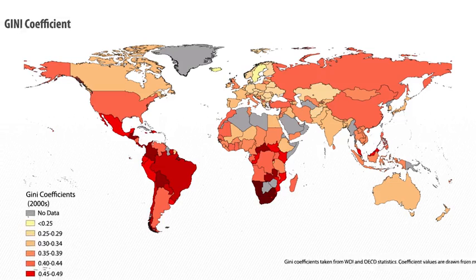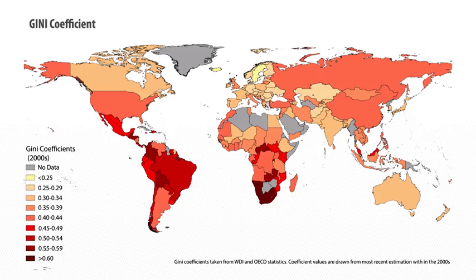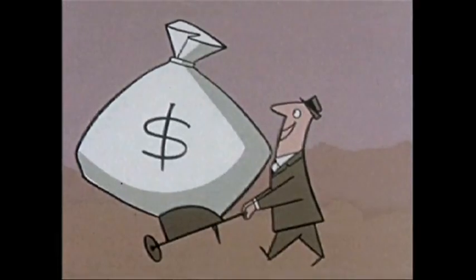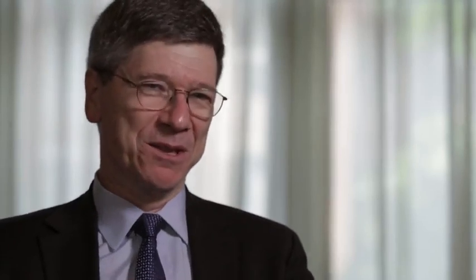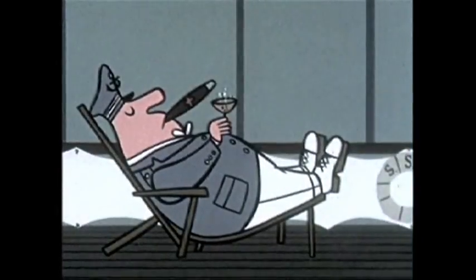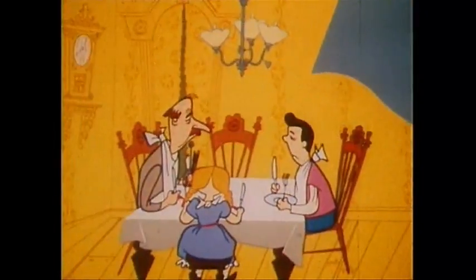Another measure that is quite useful, a little bit fancier, is a measure called the Gini coefficient. It's a measure that varies between zero and one. Zero means complete equality — everybody has the same income. And one is exactly the case of one person in the country having everything — the king, the potentate.